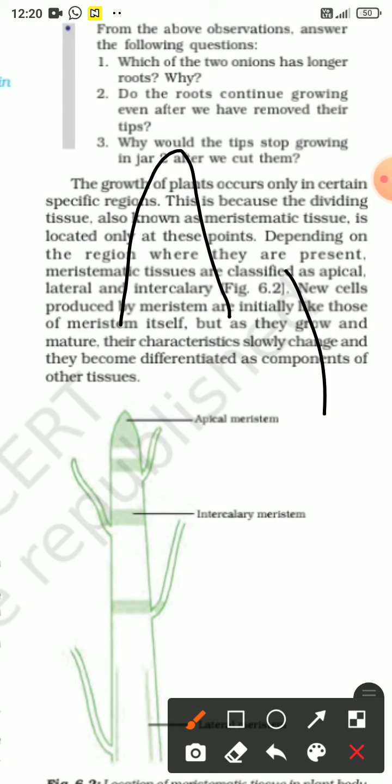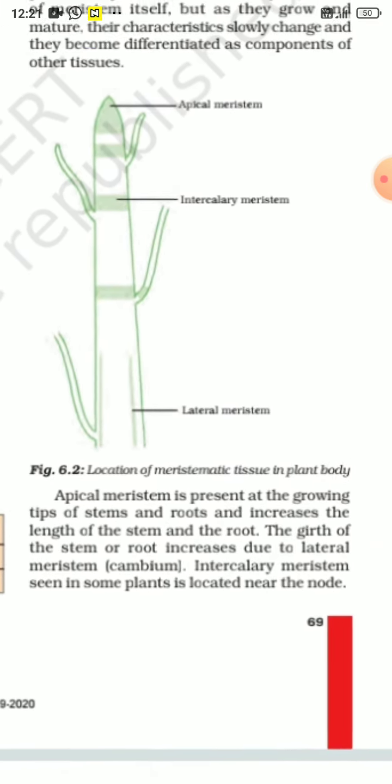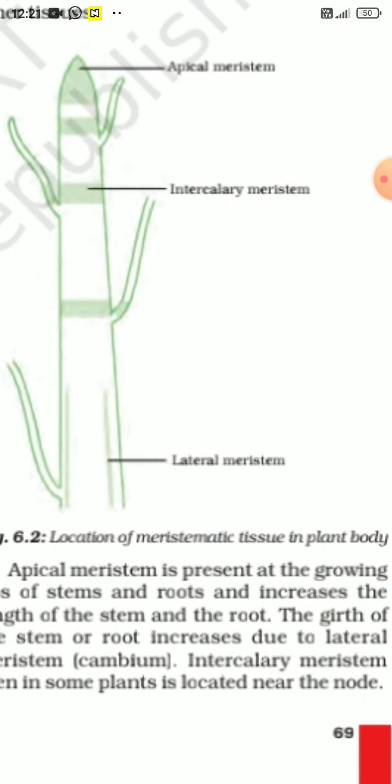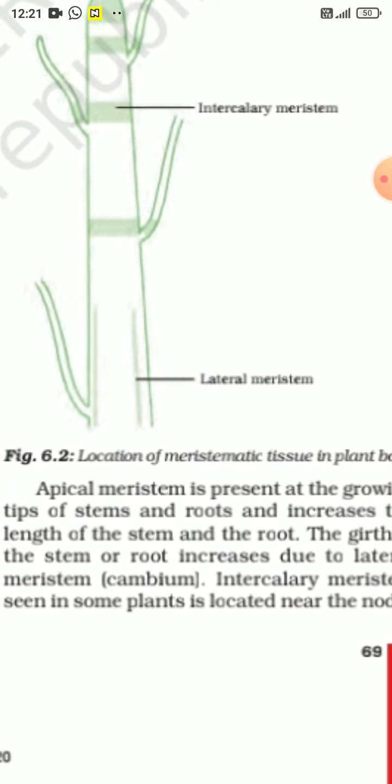Lateral meristem is used for growth of the width and the growth of the stem. Intercalary is at nodes and inter-nodes. Let us see. Apical meristem is present at the growing tips of stem and roots. If we cut the roots in the onion case, roots will not arise.